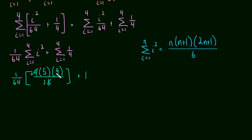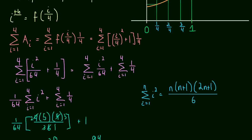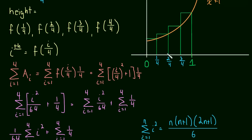You can take a two out and a three out to simplify: two times three is six, times five is 30. So this is 30 over 64 plus one — since the sum of the constant one-fourth four times is just four times one-fourth, which equals one. That gives us 94 over 64, and that's our estimate for the area using four rectangles. We'll talk about finding the exact area of this region in the next video.